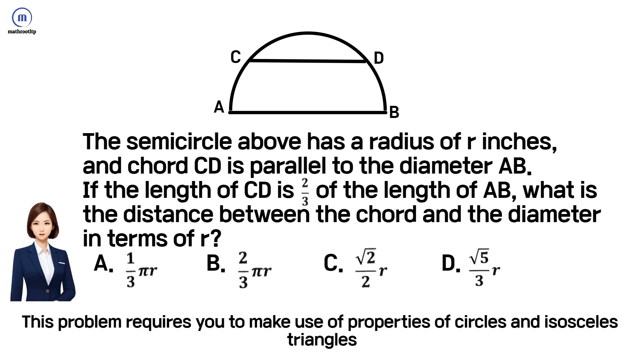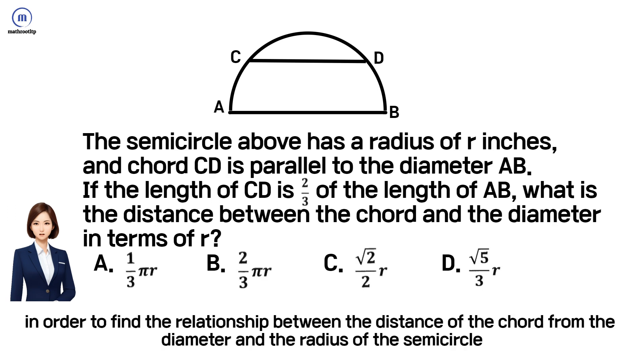This problem requires you to make use of properties of circles and isosceles triangles. You will have to draw an additional line in order to find the relationship between the distance of the chord from the diameter and the radius of the semicircle.